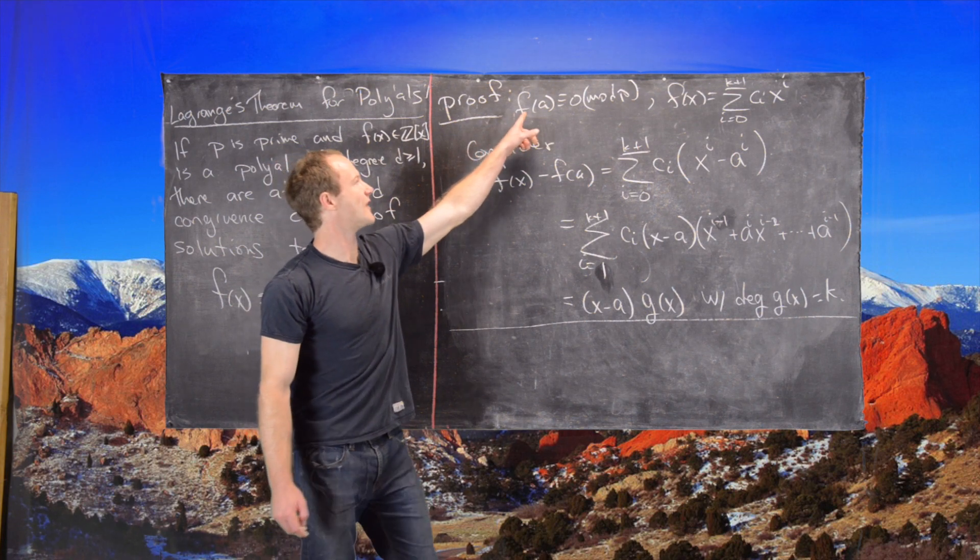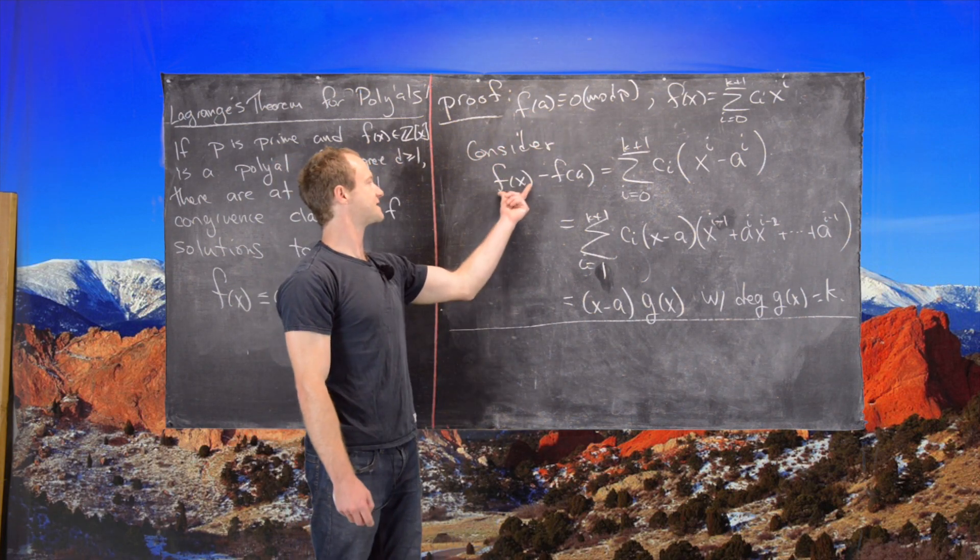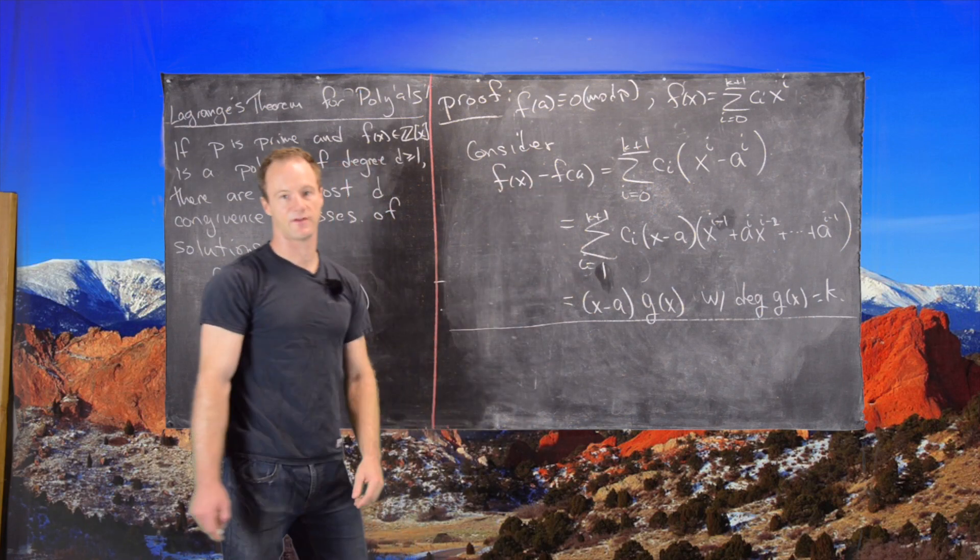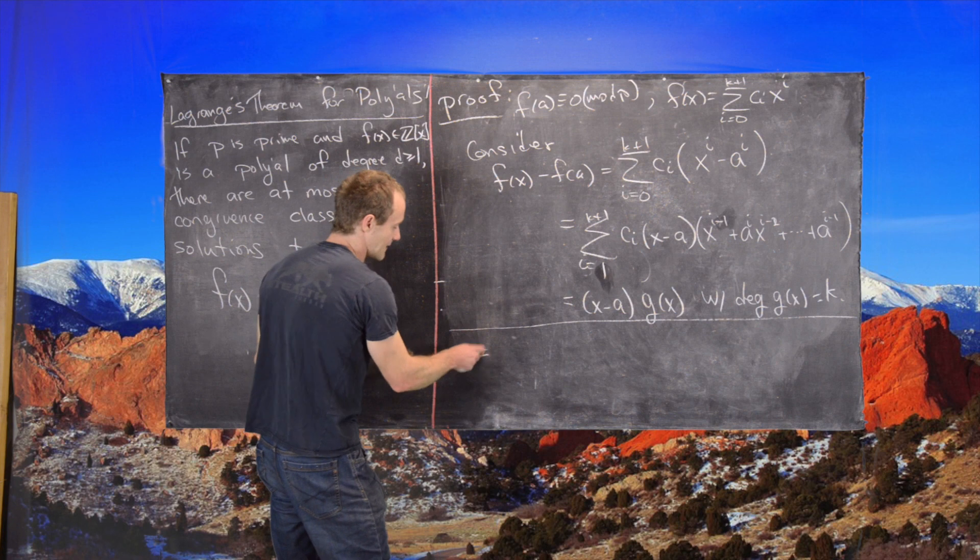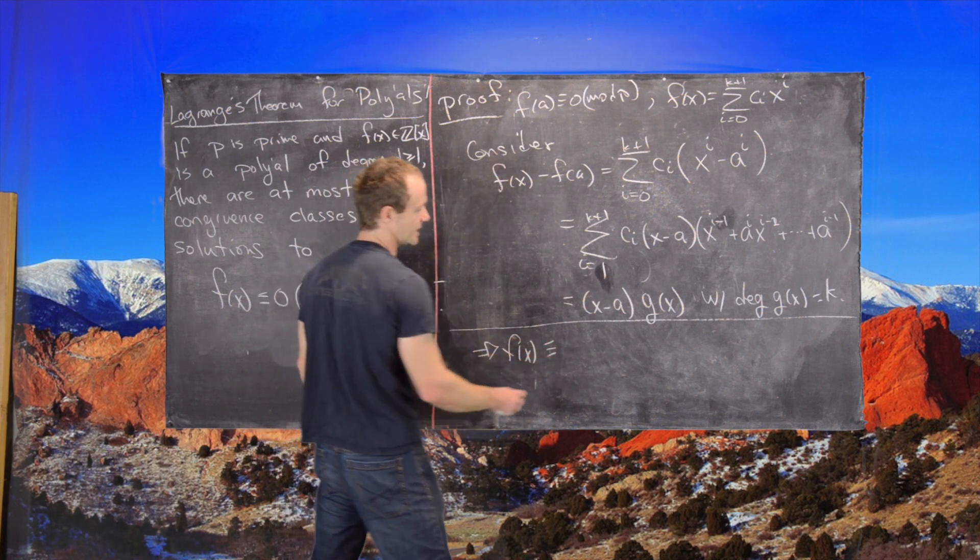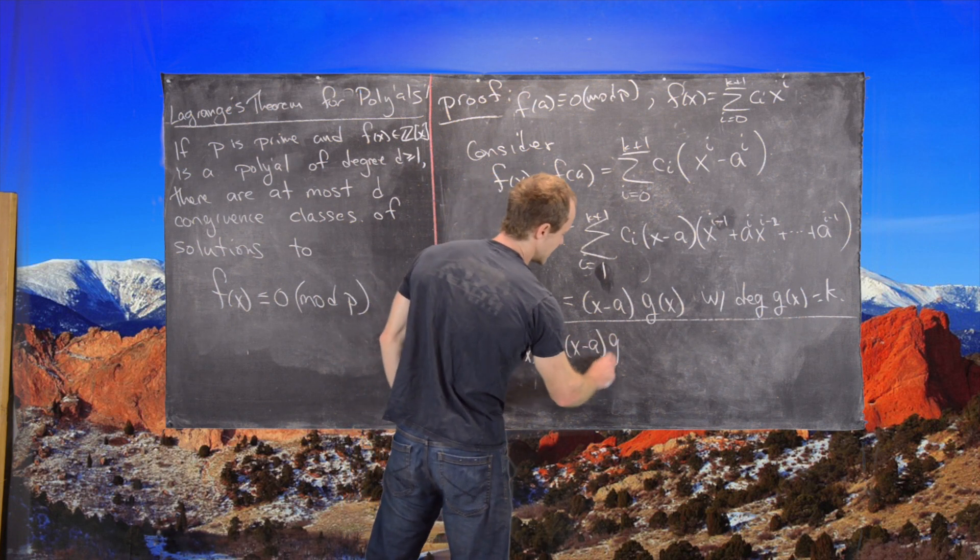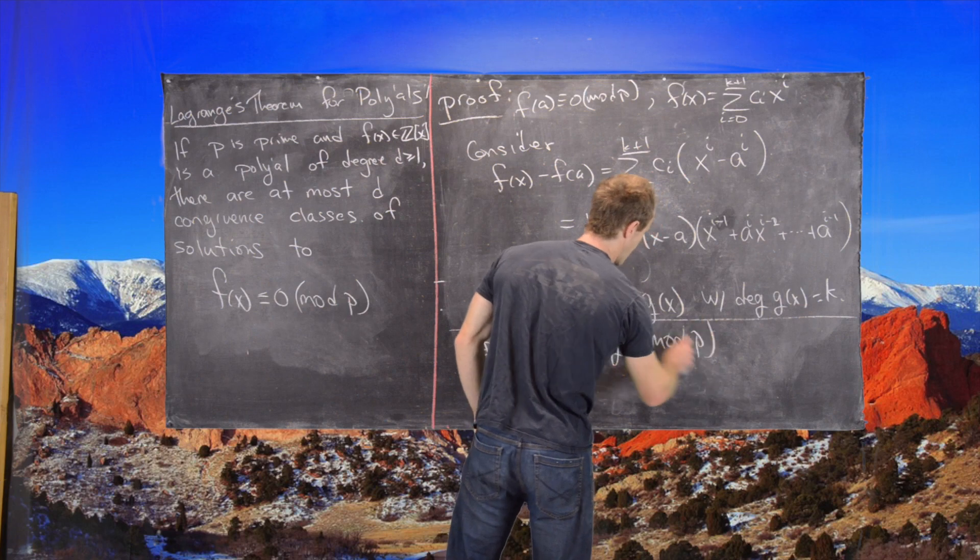Now let's see that we have F of A is congruent to 0 mod P. And we're looking at this object, F of X minus F of A. Since F of A is congruent to 0 mod P,